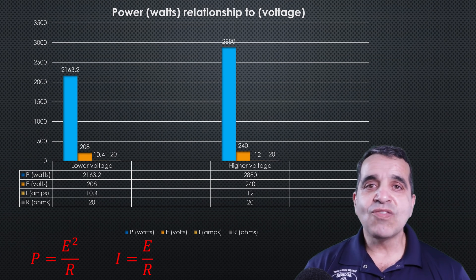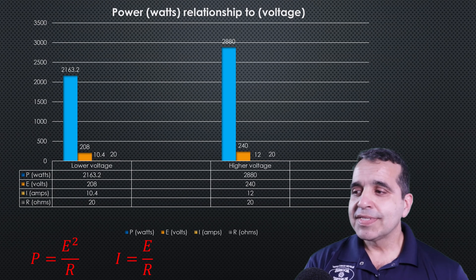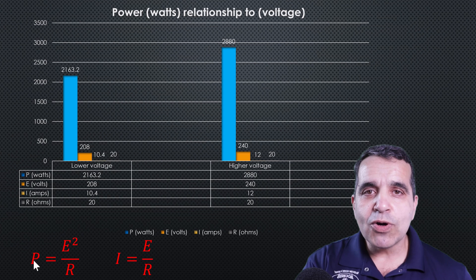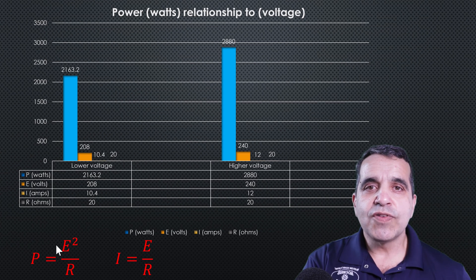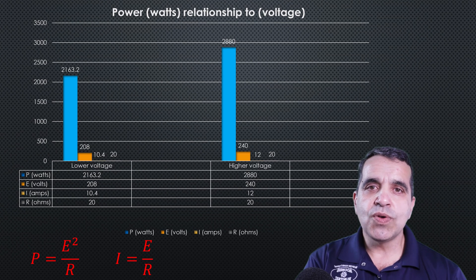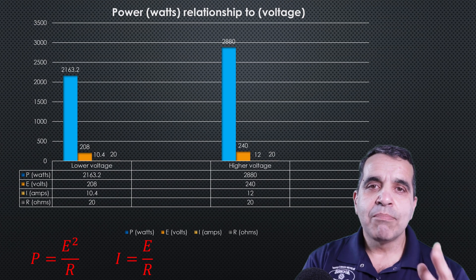So there you have it. That's why it's so important. Remember these formulas, wattage is directly proportional to the square of the voltage. So if you double the voltage, you quadruple the wattage. If you halve the voltage, you cut the wattage by four times.